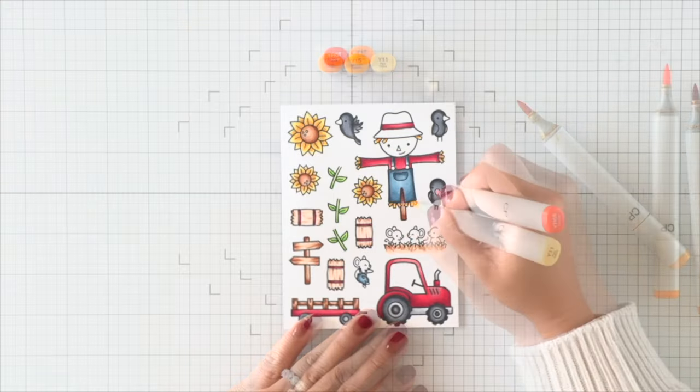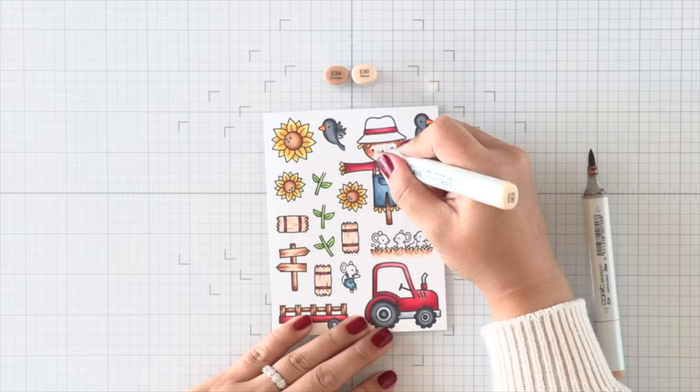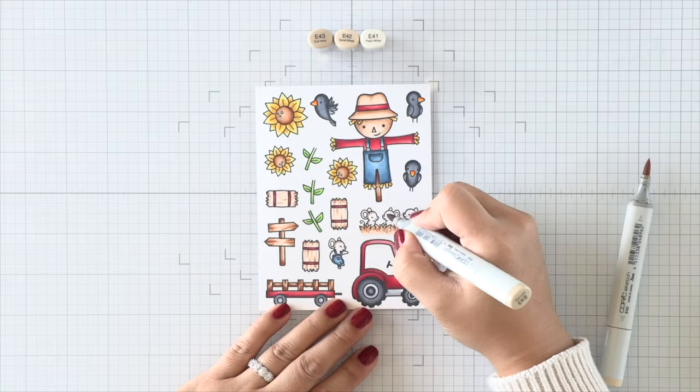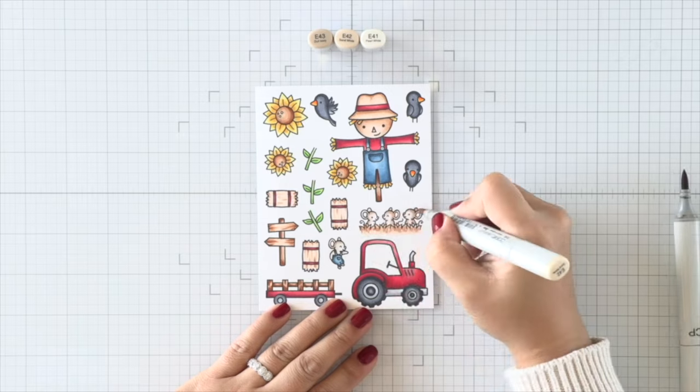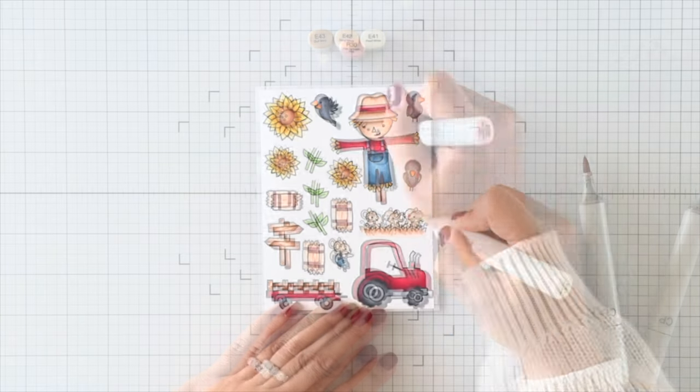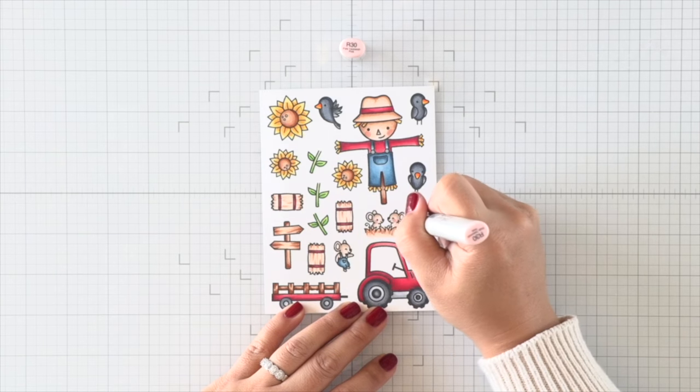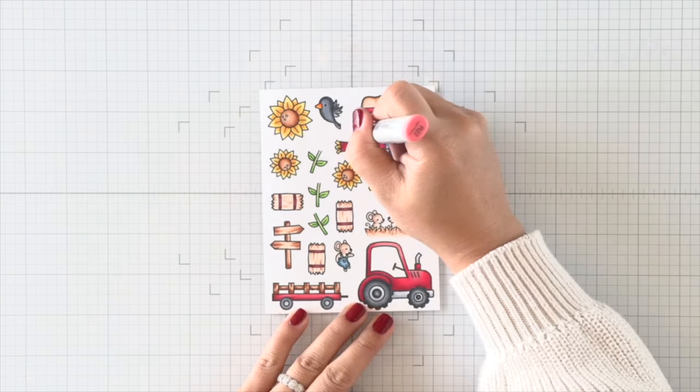And then lastly I'm going to finish off with some browns for the scarecrow's face and his hat, and some light soft browns for the mice. And of course I can't forget to add some little blush marks to the scarecrow's cheeks as well as to the mice's cheeks as well. I use R30 for a larger section for the blush, and then I go in with an R22 and just add a little dot for a bit of concentrated color.